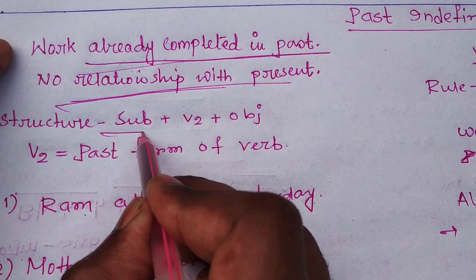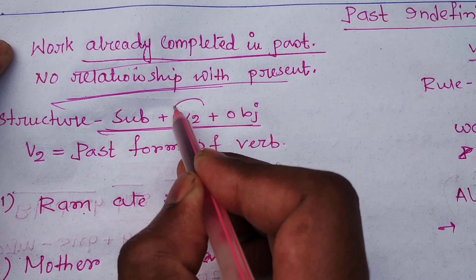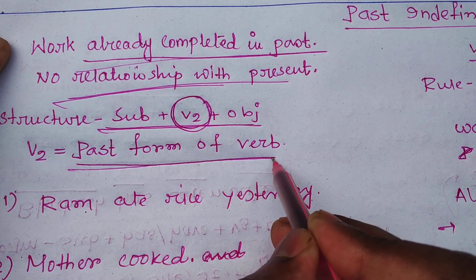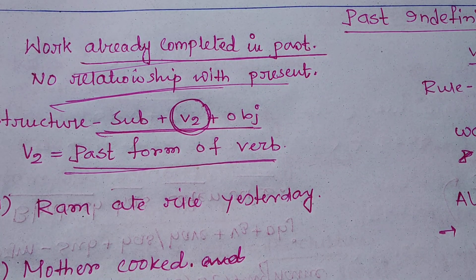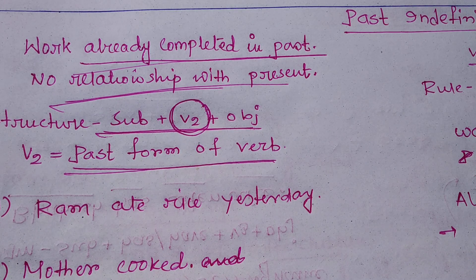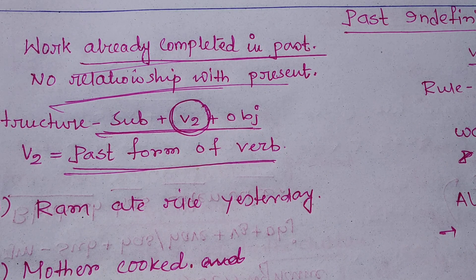Structure: subject, V2, object. What is the meaning of V2? V2 means past form of verb. We know there are three forms of verb: V1 that means present form, V2 past form, and V3 past participle form.